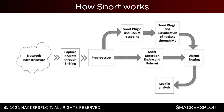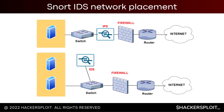Looking at how Snort works in a diagram: incoming traffic arrives at the Snort host, packets are captured through sniffing, passed through a pre-processor, then through Snort's plug-in and packet decoding. Packets are then classified, and when a signature is matched, the alarm and logging process is triggered — either logging the event or sending an alert. The Snort detection engine and rule set feed into this alarms and logging process, with results stored in a log file for analysis.